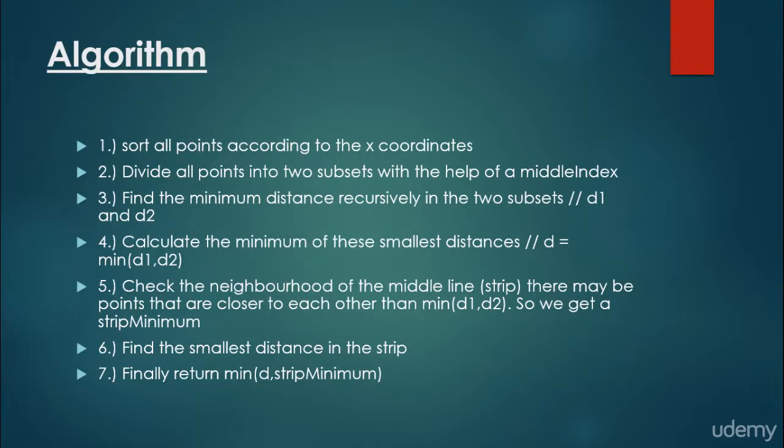What is the algorithm? First, we sort all points according to the x-coordinates. Then we divide all points into two subsets at the middle index, creating a left array and a right array. Then we find the minimum distance recursively in the two subsets: d1 is the minimum distance between the closest points in the left subset, and d2 is the minimum distance of the closest pair of points in the right subset.